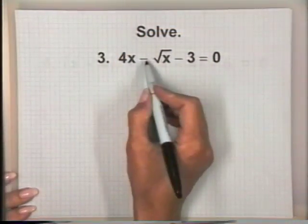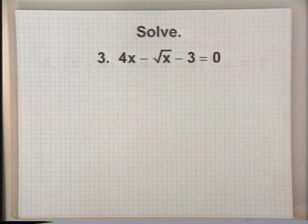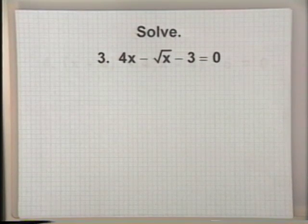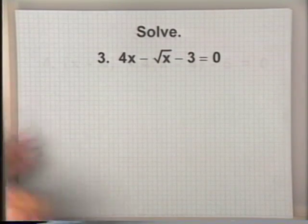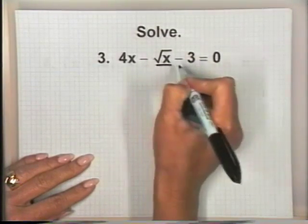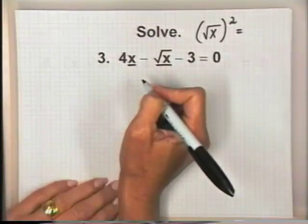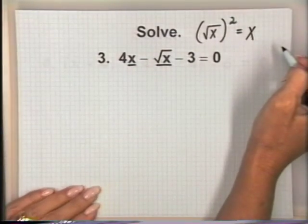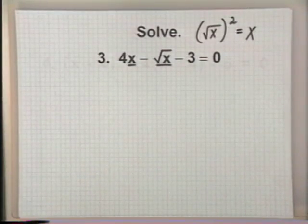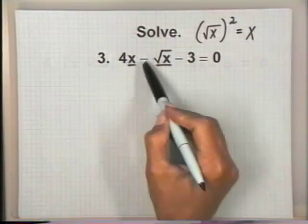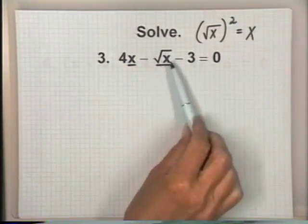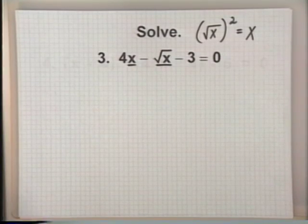Let's work problem number 3: 4x minus the square root of x minus 3 equals 0. We recognize this as a radical equation and could solve it by isolating the radical. But let's see if it's also an equation in quadratic form. We look at the variable part in the second term — the square root of x. If we square the square root of x, we get x, which is the variable part of the first term. So this is an equation in quadratic form.